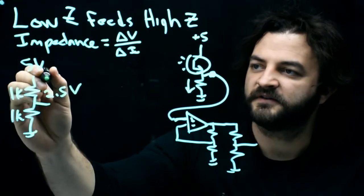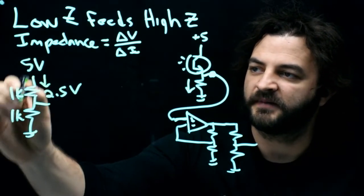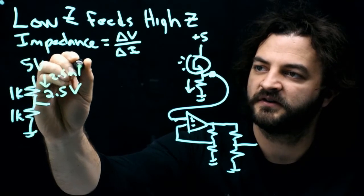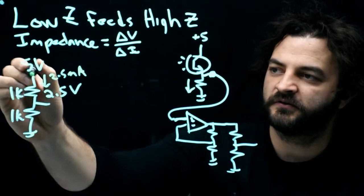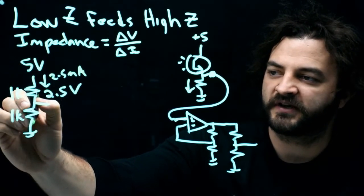How much current is leaving 5 volts? Well, it's 5 volts divided by 2k, so it's 2.5 milliamps of current, leaves the 5 volt source, goes through the first resistor, goes through the second resistor to ground.